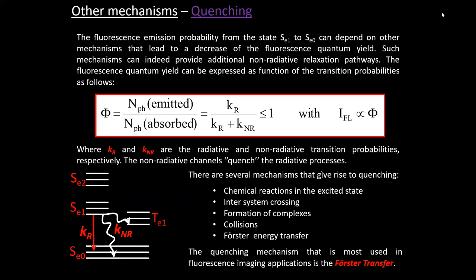We discuss the possibility to have fluorescence from an excited state to the ground state, or other processes that relax energy. We can introduce these transition probabilities: k sub r (radiative) and k sub nr (non-radiative). Once a molecule is in an excited state, it will have a probability to relax by emitting light. k sub r is a number between zero and one — it is a probability.